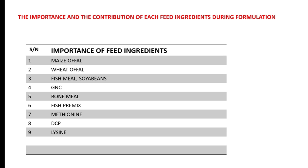Fish meal and soybeans are protein sources that help in body building and body maintenance in fish. Soybean is preferred over groundnut cake as a plant protein because of its availability of essential amino acids that help in the fast growth of the fish. Groundnut cake is used as a source of fat, though it is also a protein source. Bone meal provides minerals — specifically phosphorus and calcium — which aid in strengthening the bones of the fish.